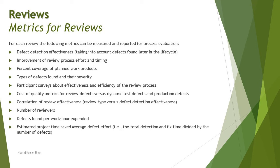Cost of quality metrics — comparing review defects versus dynamic test defects — to measure which approach is more effective: static or dynamic testing. Correlations of review effectiveness can be measured by comparing review type versus defect detection effectiveness. For example, comparing defects found during informal reviews of test cases versus inspection of work documents and contracts, to see which technique is more efficient.